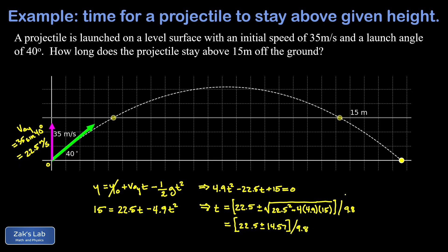So we get two solutions, one corresponding to the plus and one corresponding to the minus. So we'll do the minus one first. We take 22.5 minus 14.57 and then divide the result by 9.8. And this gives us about 0.809 seconds. That's the first time the projectile passed through the 15 meter mark.